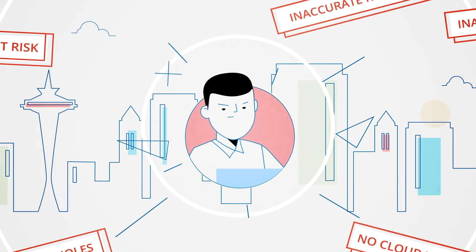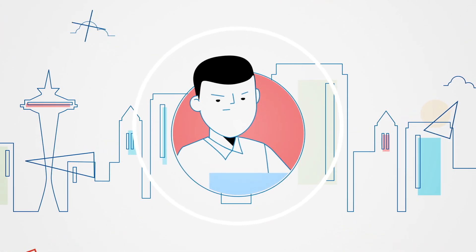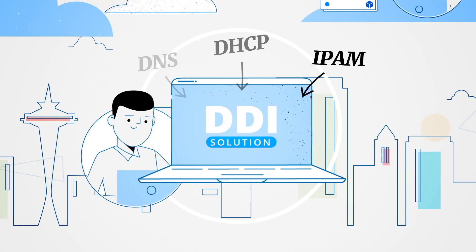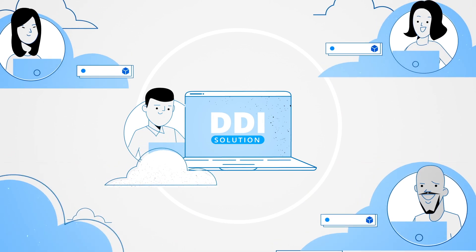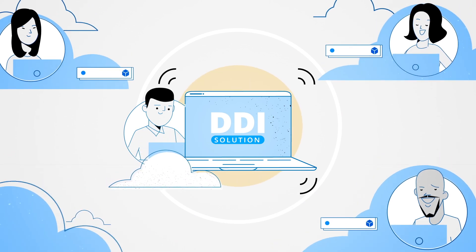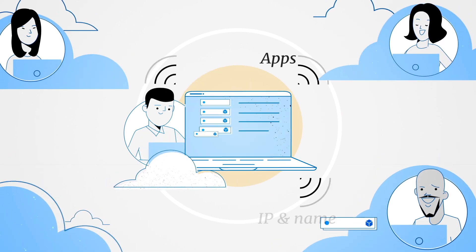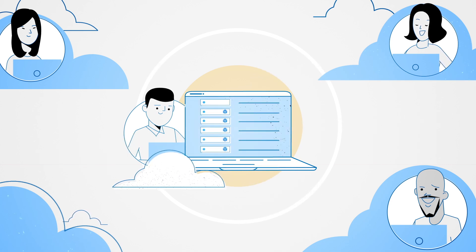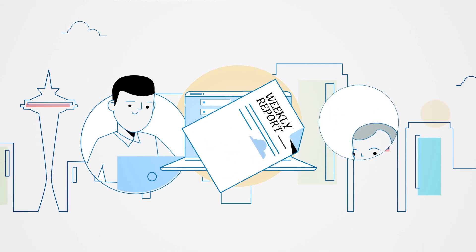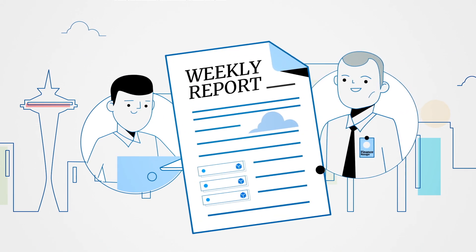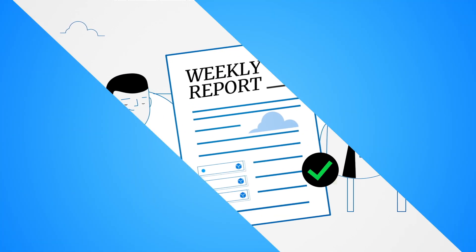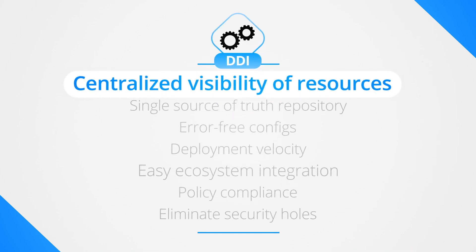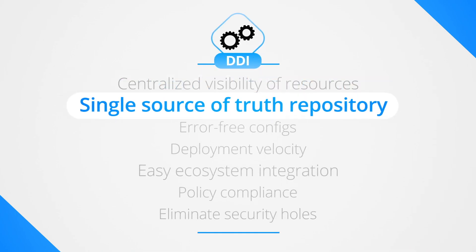Tom needs to take back control. So he installs a DDI solution that gives him multi-cloud visibility with dynamic discovery. Now Tom can rely on his IP address management as a central inventory, and the reports sent are accurate again. In fact, DDI brings many benefits for automating application and infrastructure management.